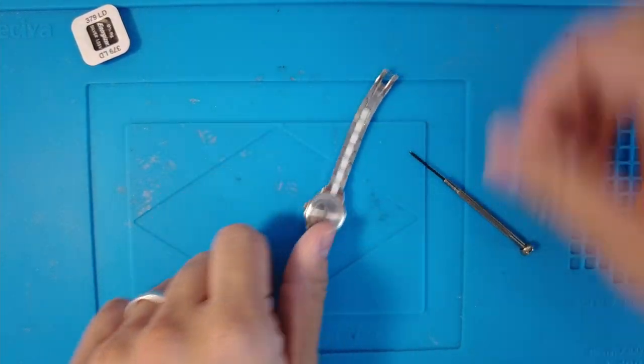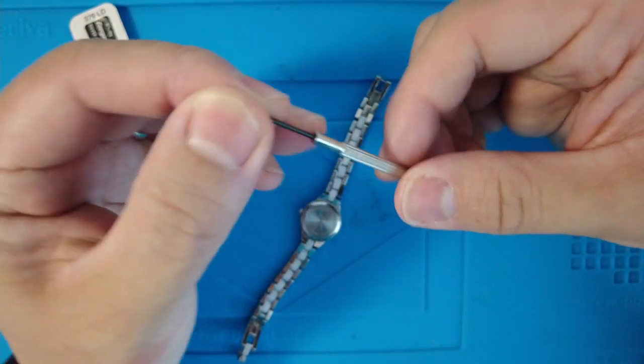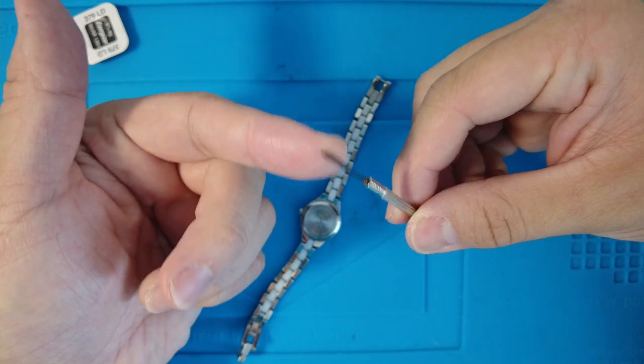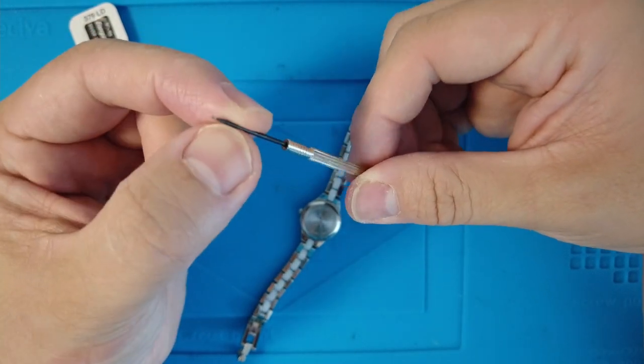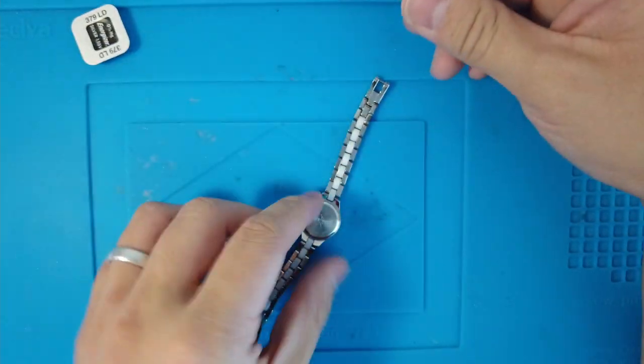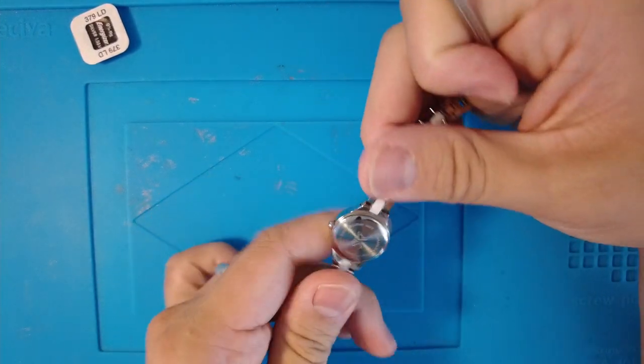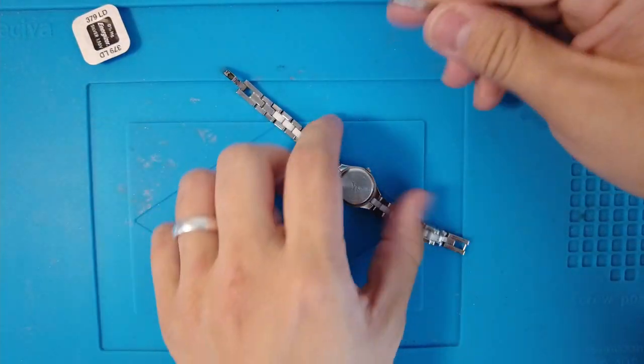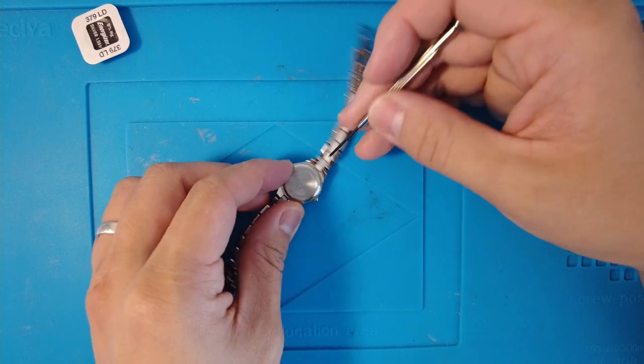The first thing I'm going to need is a tiny flathead screwdriver. This isn't a specific watch one, but anything with a tiny flathead will do. I'm not really a watch expert, but I've done a few of these before. It's not that complicated.